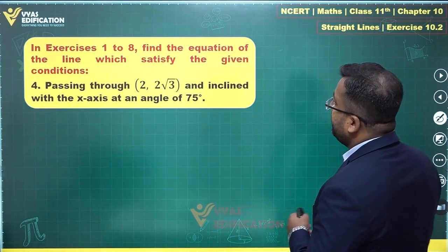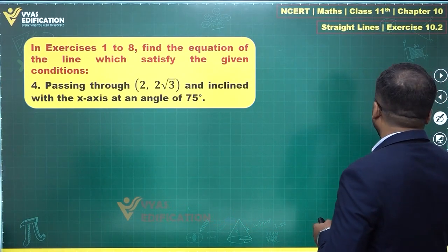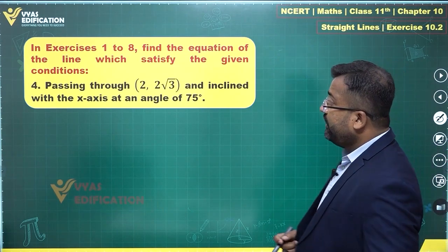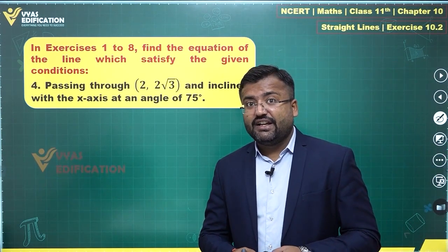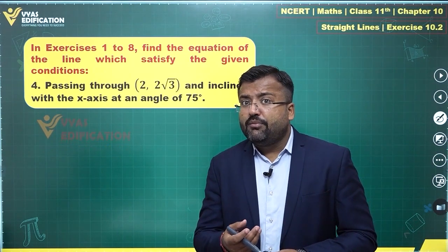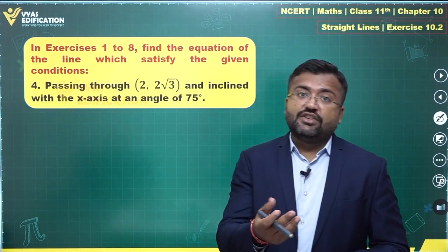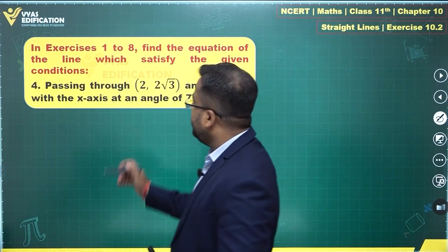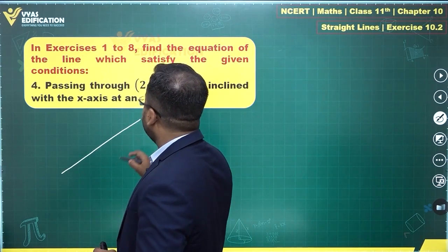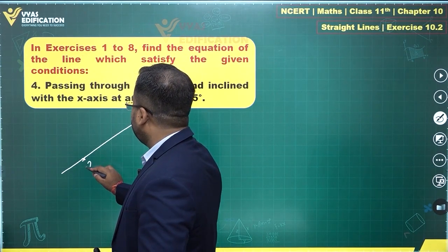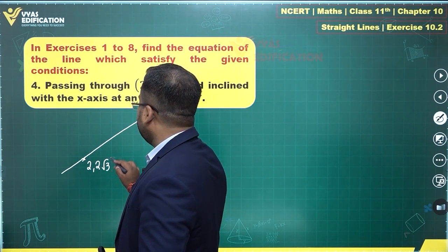The fourth question says passing through 2 comma 2 root 3 and inclined with x-axis at an angle of 75 degree. Now inclined at an angle of 75 degree with the x-axis, you are given slope but you are not given the slope directly. You're given inclination on the basis of which you can find the slope, and you already have a point over here. Let's say this is point 2 comma 2 root 3.